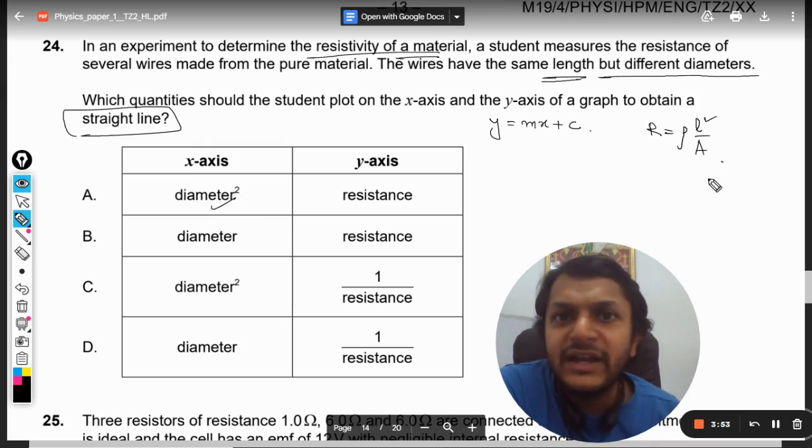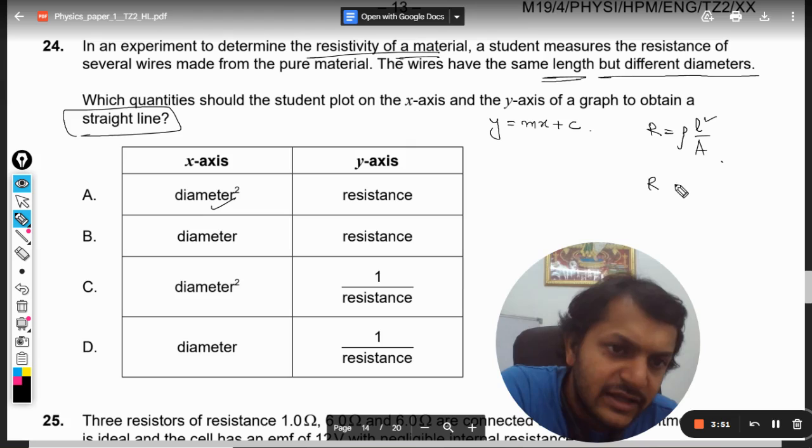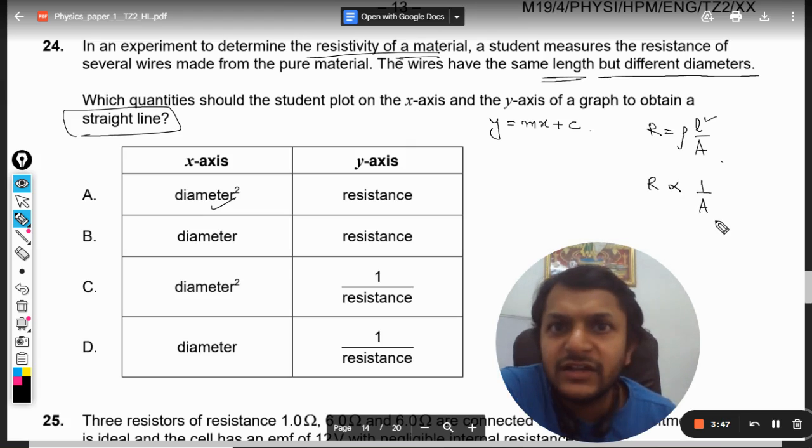We can say that resistance is directly proportional to 1/A. Every other thing will be part of the slope. So R ∝ 1/A, which can be written as R ∝ 1/d².